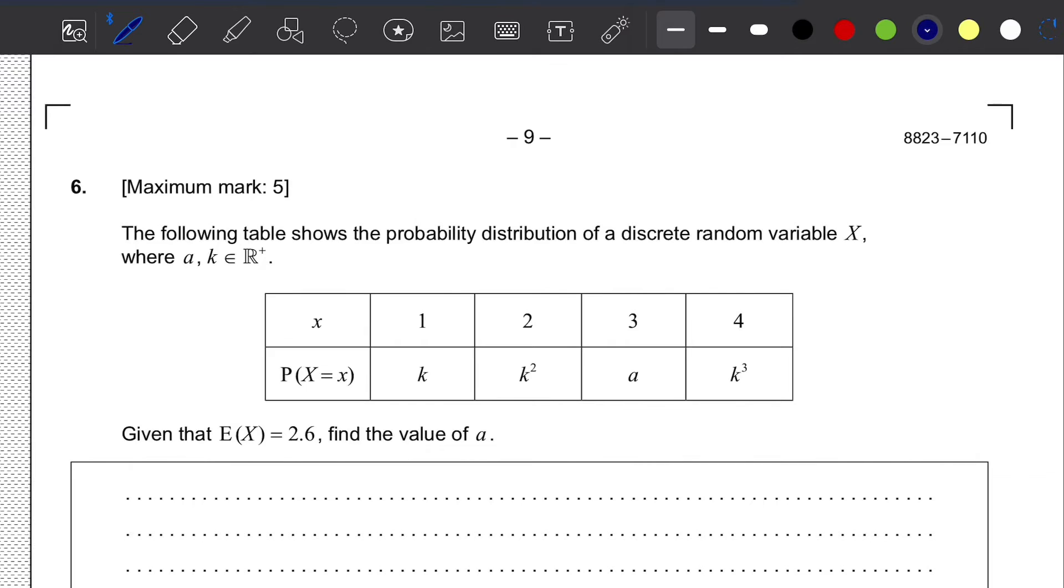Question number 6. We have a question from topic 4 of your curriculum, specifically the statistics section, focusing on the expected value concept. Here we have a table that shows the probability distribution of a discrete random variable x, where a and k values are positive real numbers. We have expected value equal to 2.6, and we need to find the value of a. The table has two unknown variables: k and a.